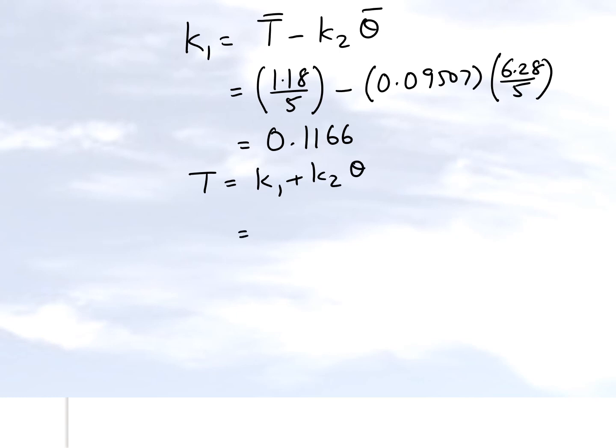So our general model was torque is equal to k1 plus k2 theta. So k1 we just found out was 0.1166. And k2 we found from the previous slide which was this quantity right here. So that's our general linear regression model for our torque versus theta for this particular case here.